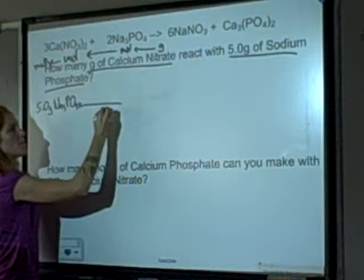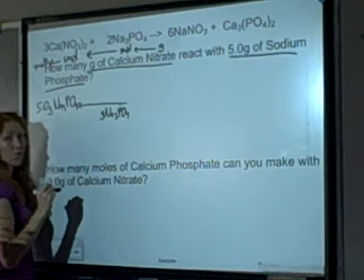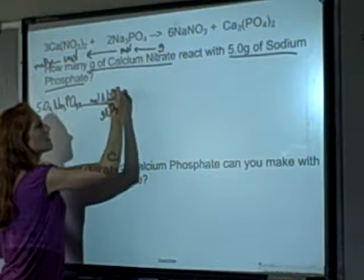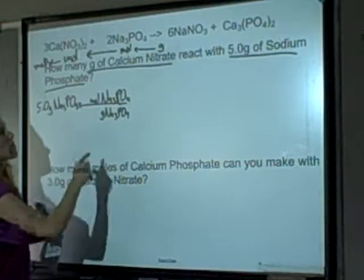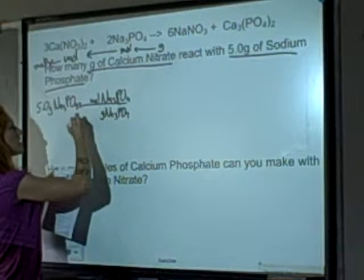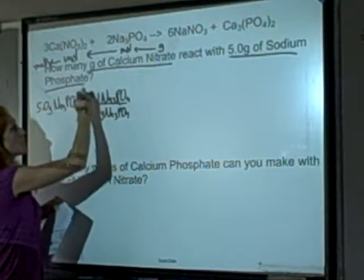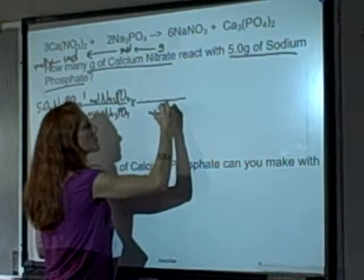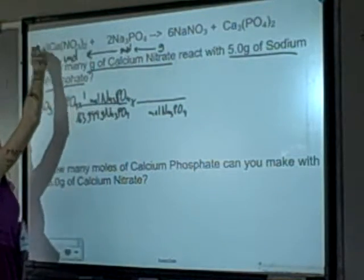Whatever unit I have goes on the bottom, so grams of Na3PO4. I'm hoping to find moles of sodium phosphate. Grams and moles are related by molar mass — I add up the mass of 3 sodiums, 1 phosphorus, and 4 oxygens. That gives 163.944 grams equal to 1 mole of sodium phosphate. So now I put moles of sodium phosphate on the bottom and relate those moles to moles of calcium nitrate.